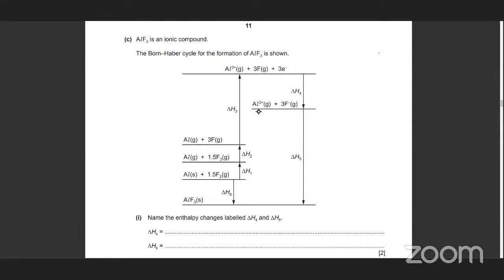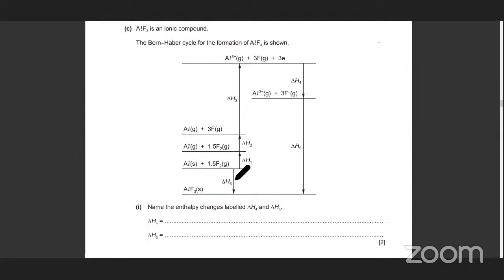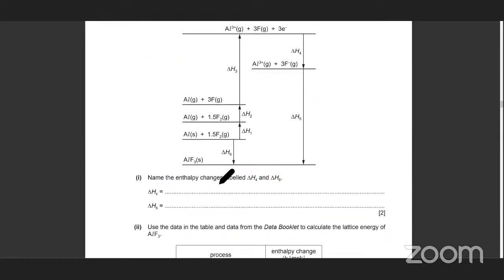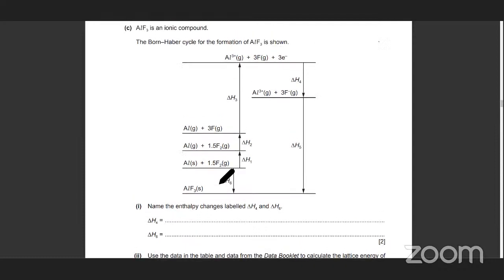So now this one — starting with this one, a Born-Haber cycle. So a Born-Haber cycle is constructed already and you're supposed to label enthalpy change 4 and 6. So we're going to try and do that quickly — figure out 4 and 6.